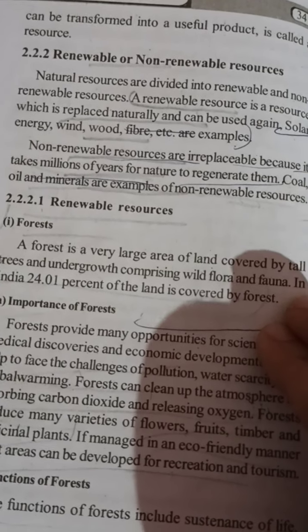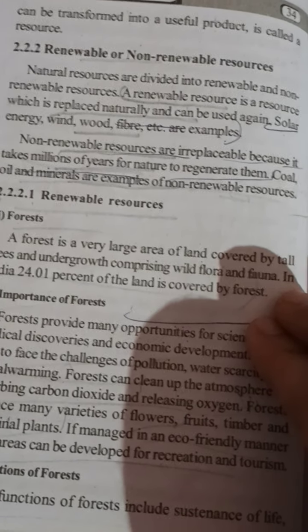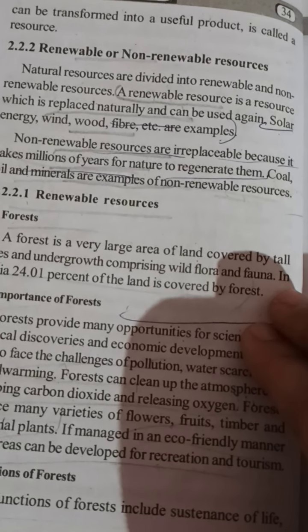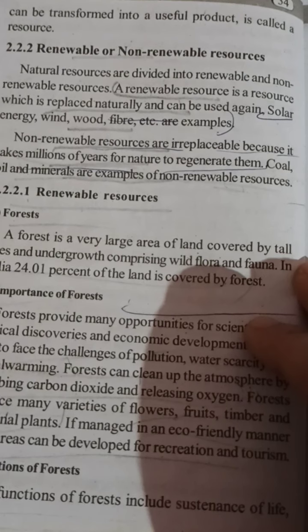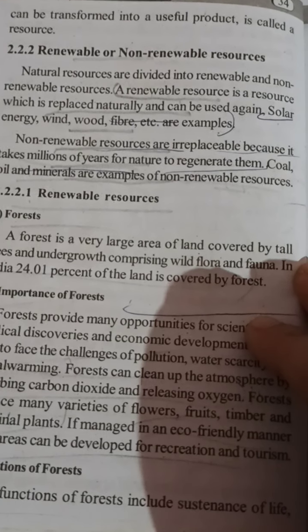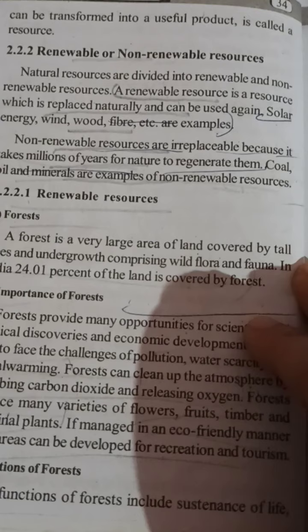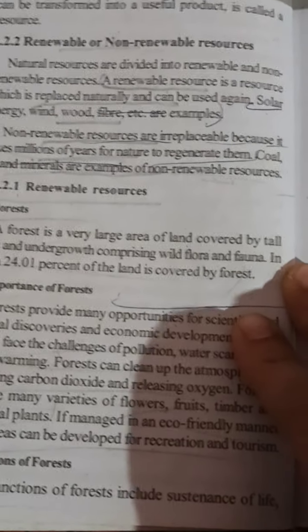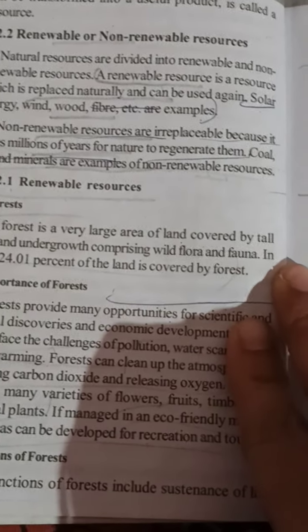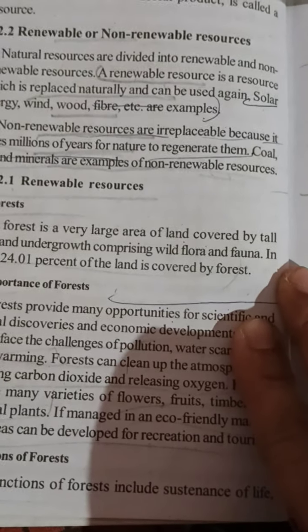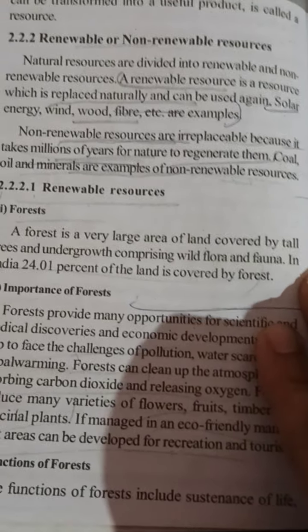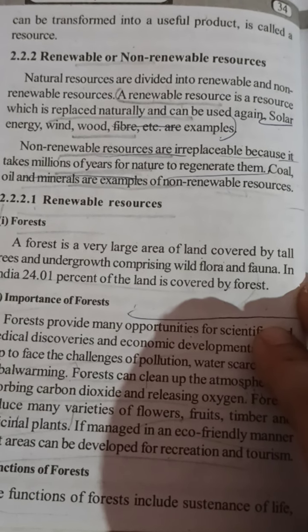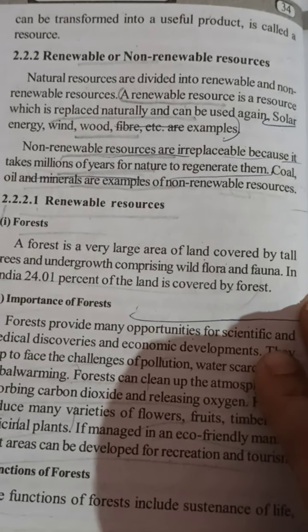A renewable resource is a resource which is replaced naturally and can be used again and again. It doesn't exit completely from the earth and is produced according to usage. Examples of renewable resources include solar energy, wind, wood, and fiber.